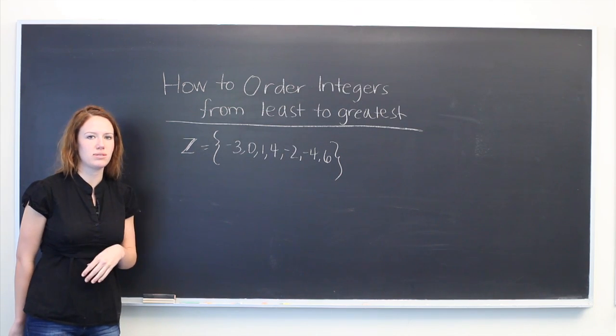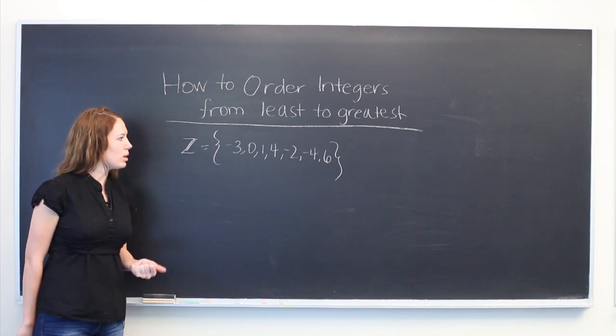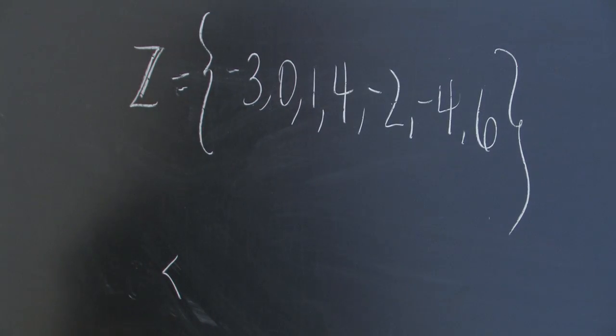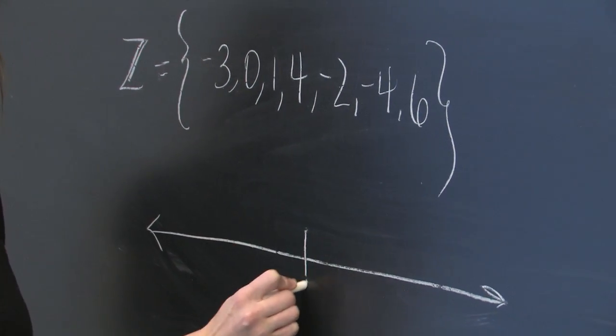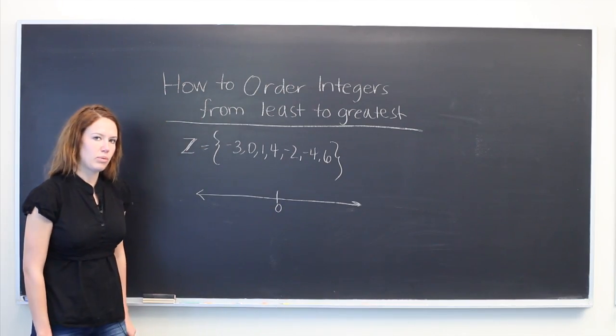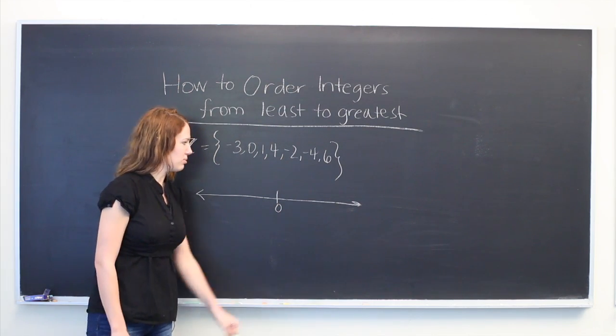What we're trying to do is arrange them from least to greatest. One way that will be helpful to do this is to draw a number line where 0 is in the middle. We know that we have negative values to the left of 0 and positive values to the right.